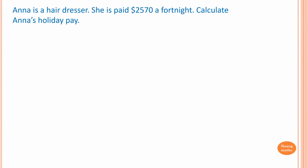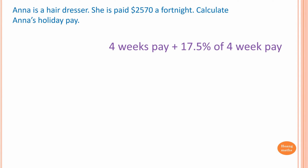For example, Anna is a hairdresser. She is paid two thousand five hundred and seventy dollars a fortnight. To calculate Anna's holiday pay, first we need to work out four-week pay, then we need to work out 17.5 percent of four-week pay, and we add them together — that is holiday pay.